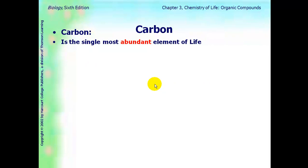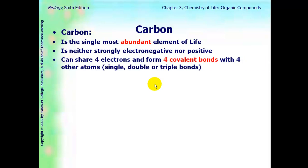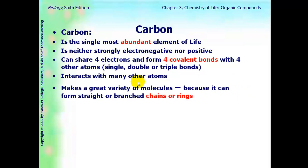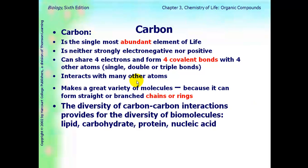Carbon is very abundant. You can find it everywhere. It is neither strongly electronegative nor positive. It has four valence electrons, so it can share those four electrons and form four covalent bonds with four other atoms. Those bonds can be single covalent bonds, double covalent bonds, or triple covalent bonds. They interact. Because of that, they interact with many other atoms. And because of that, they make a great variety of molecules. They can form straight chains or branched chains, or they can form ring structures. And so this diversity of what they can do provides us with a diversity of biomolecules, which is what this chapter is about.